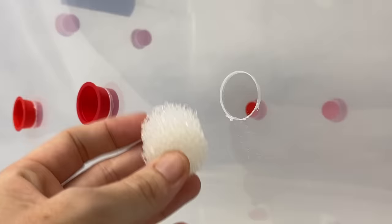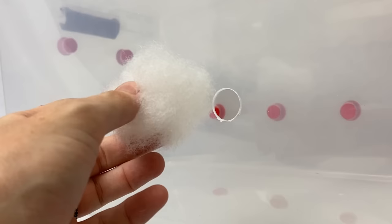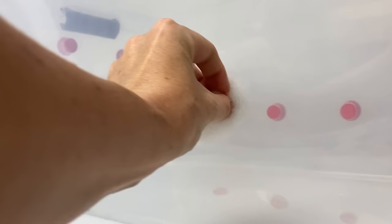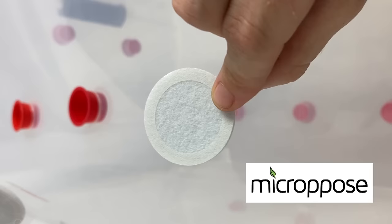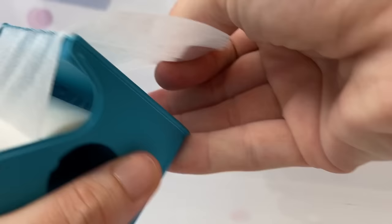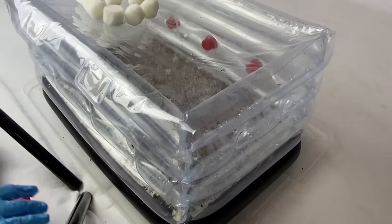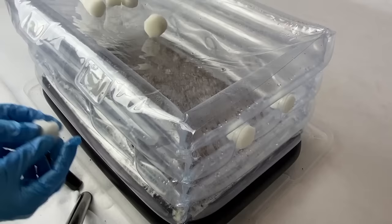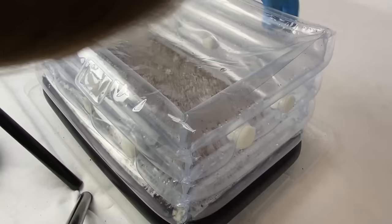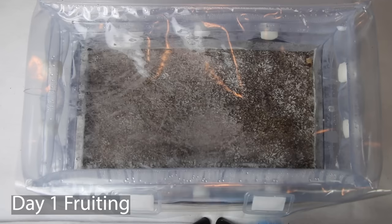When the tub is about 80% colonized, it's time to start the fruiting stage. Next, we need to remove the red plugs and replace with our foam filters. You can also use polyfill, micropore filters, or micropore tape. For the inflatable monotub, I really like to use the foam filters. I think they work super well. I also like that they're easily removable.